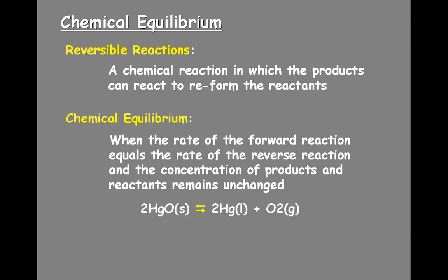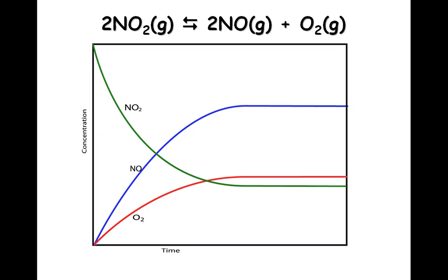Many times equilibrium is written with either a double-headed arrow or two arrows, one above the other, pointing in opposite directions. This particular reaction would be an equilibrium reaction where you have mercury oxide going to mercury and oxygen. The arrows indicate that the reaction can go either way and that it is at equilibrium. For example, NO₂ gas producing NO gas and oxygen — notice the double-headed arrow, meaning you're in an equilibrium state.